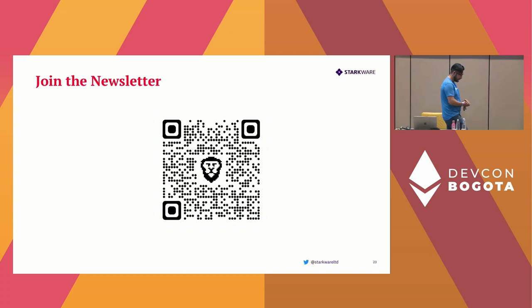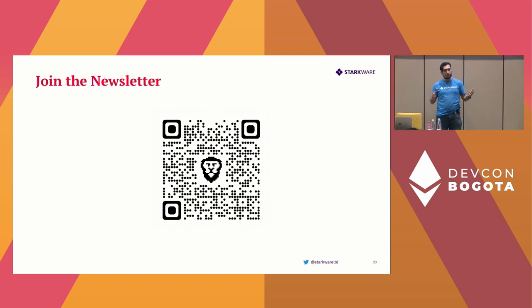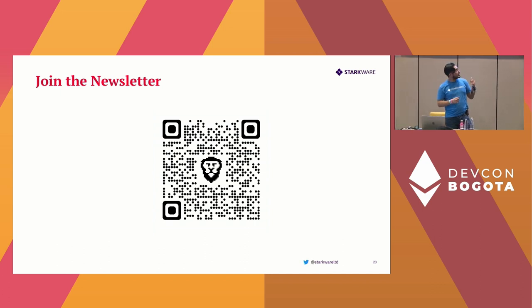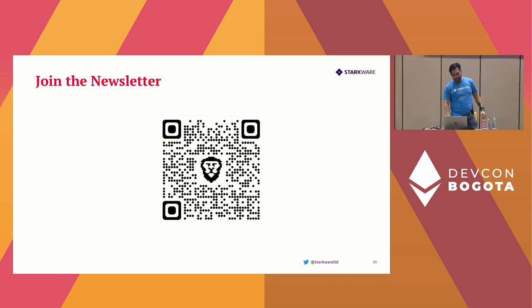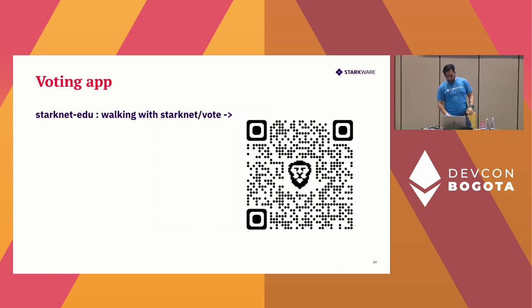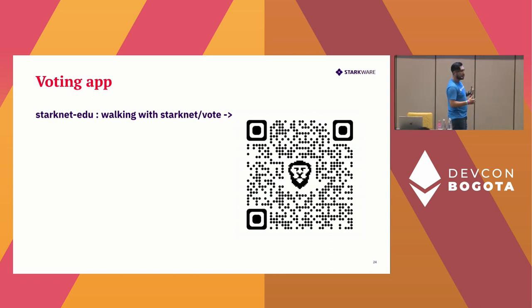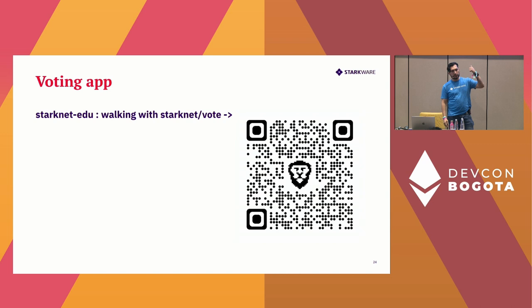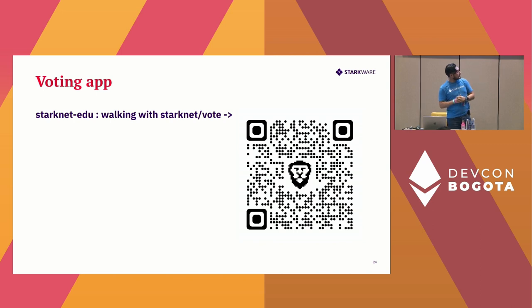We also have a newsletter with a lot of educational material and interesting projects happening in the ecosystem — you can subscribe via Substack. What we're going to be doing today is a voting application that will allow a person to vote for one or zero — one for yes, zero for no — and deploy it on the testnet. This is the repo we're going to be using, so feel free to scan the QR code to clone it or just look at the code.